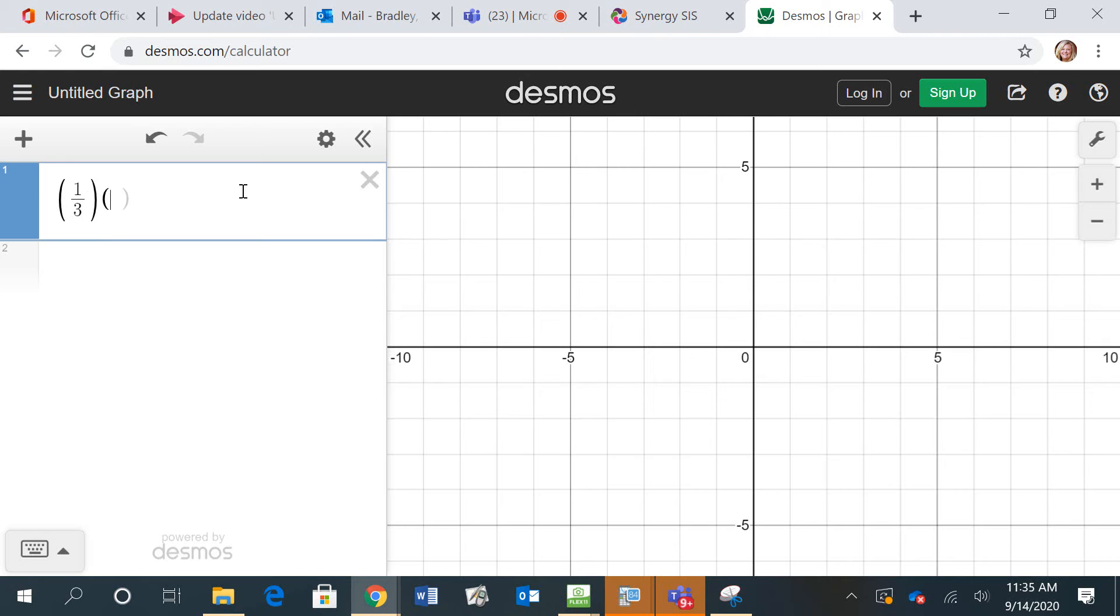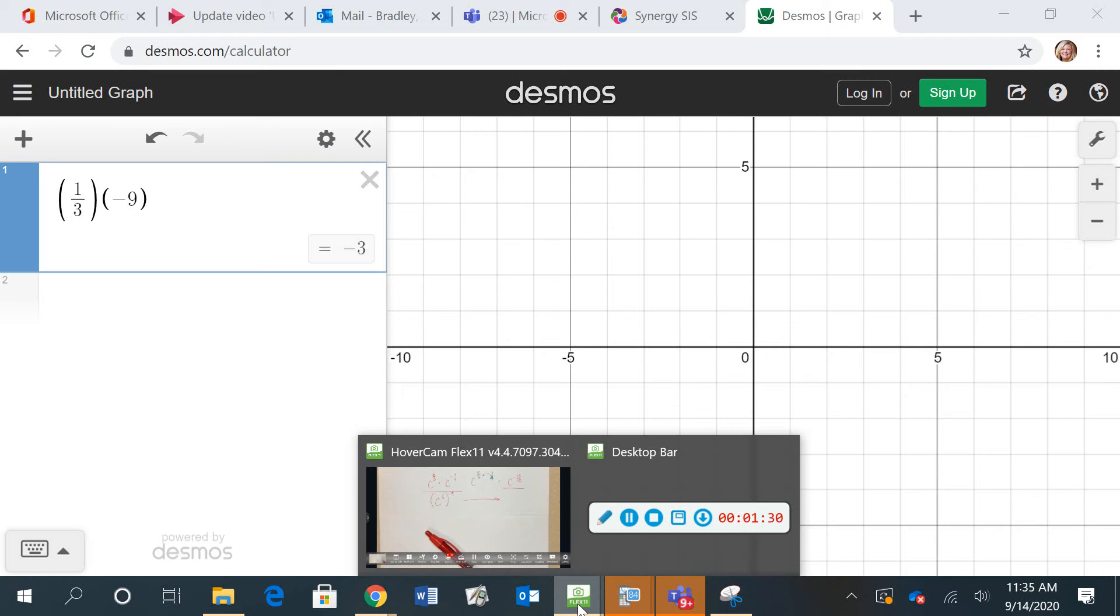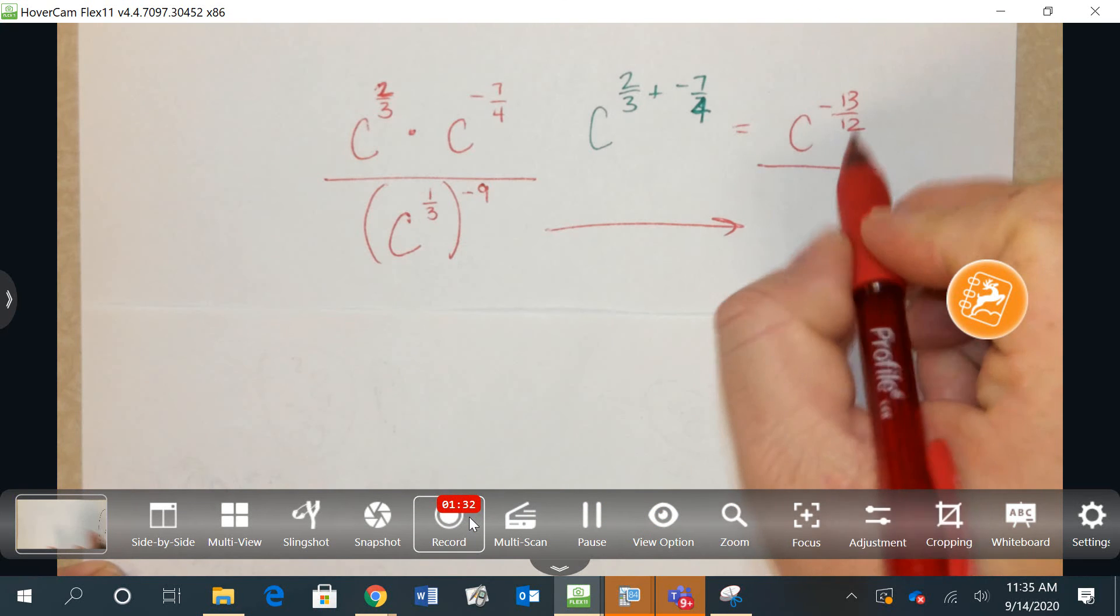1 third times negative 9, we can see the answer is negative 3. So what do I do here? There's a couple different ways to do this.